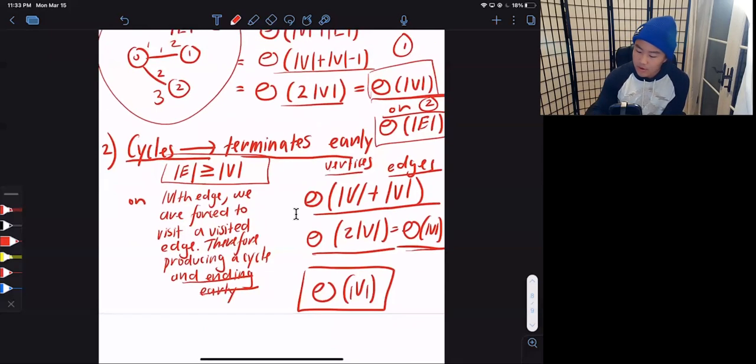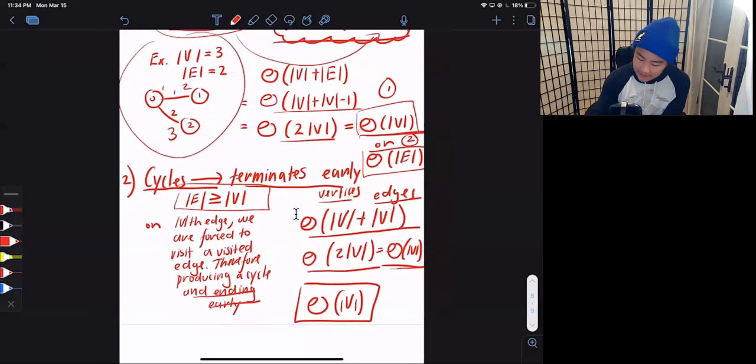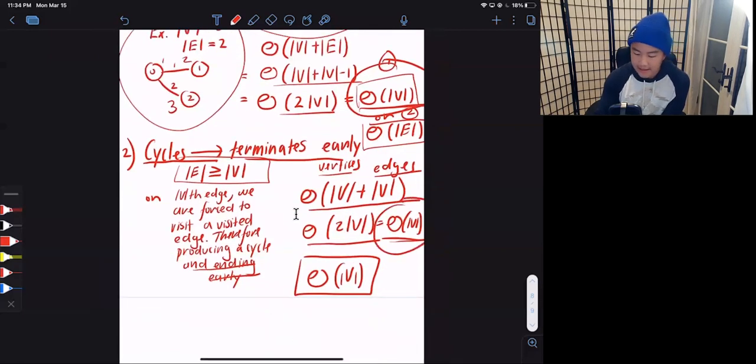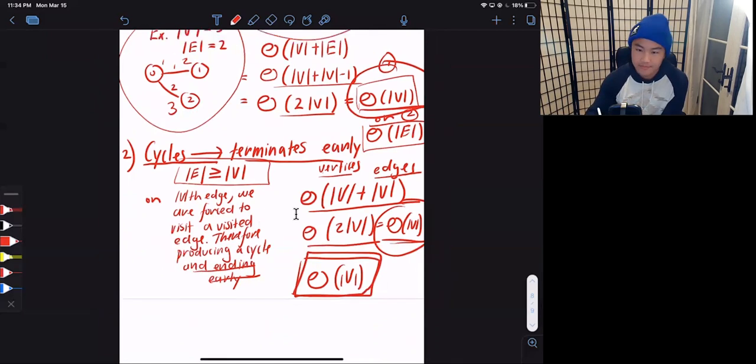And so since theta V encompasses both the no cycle case and the cycles case, therefore it's safe for us to use theta V to represent the worst case of this algorithm. And that's it for this problem. Thanks for tuning in.